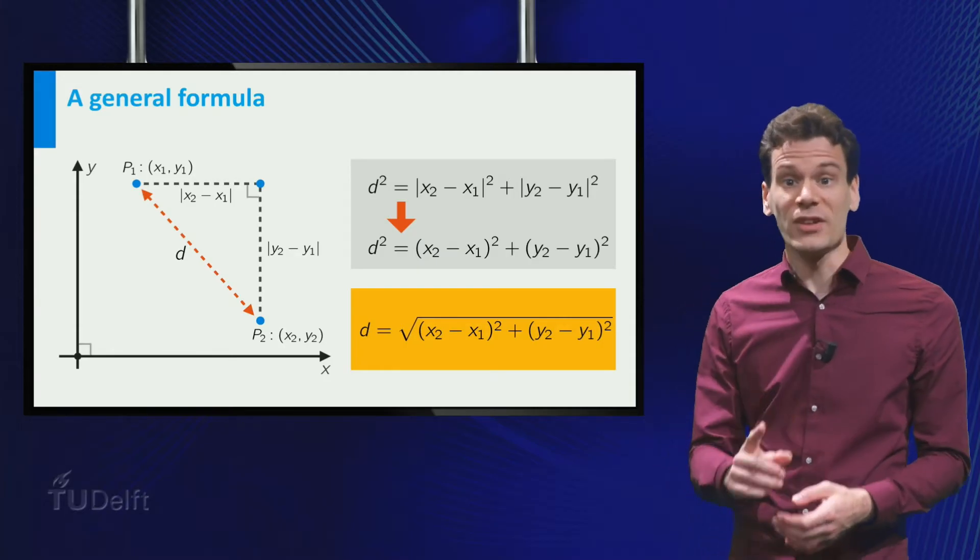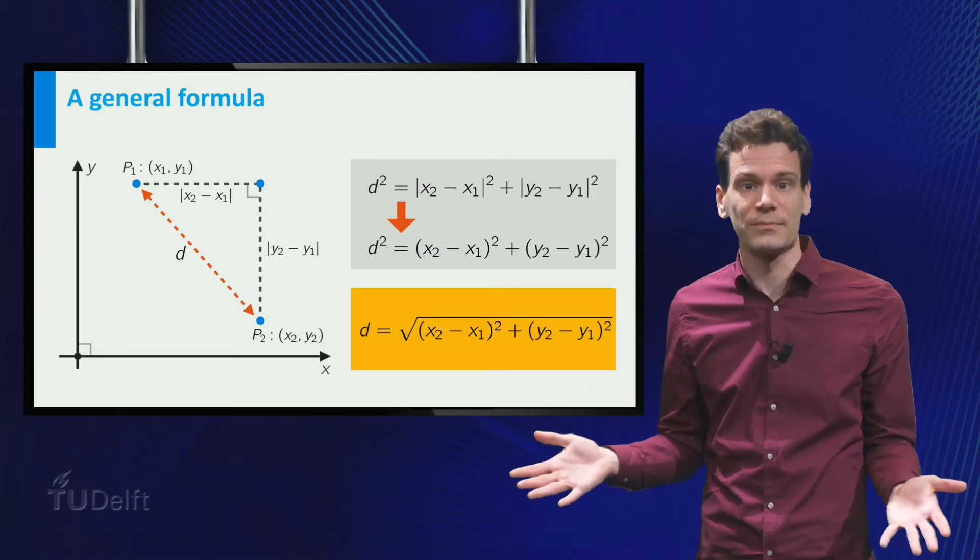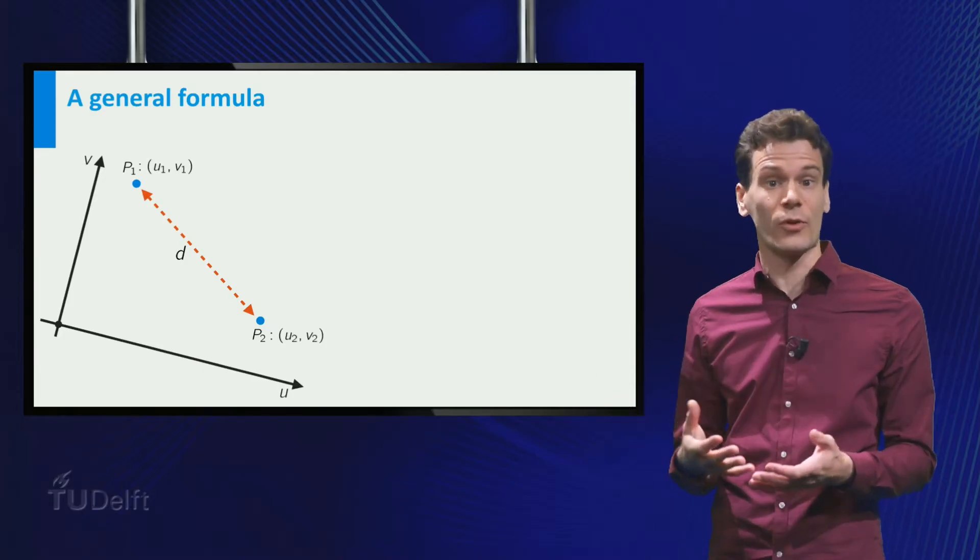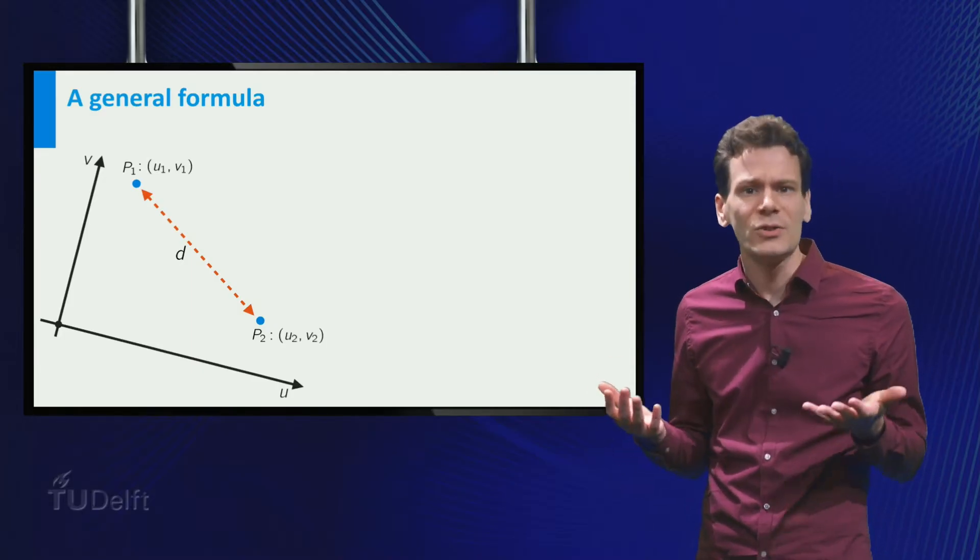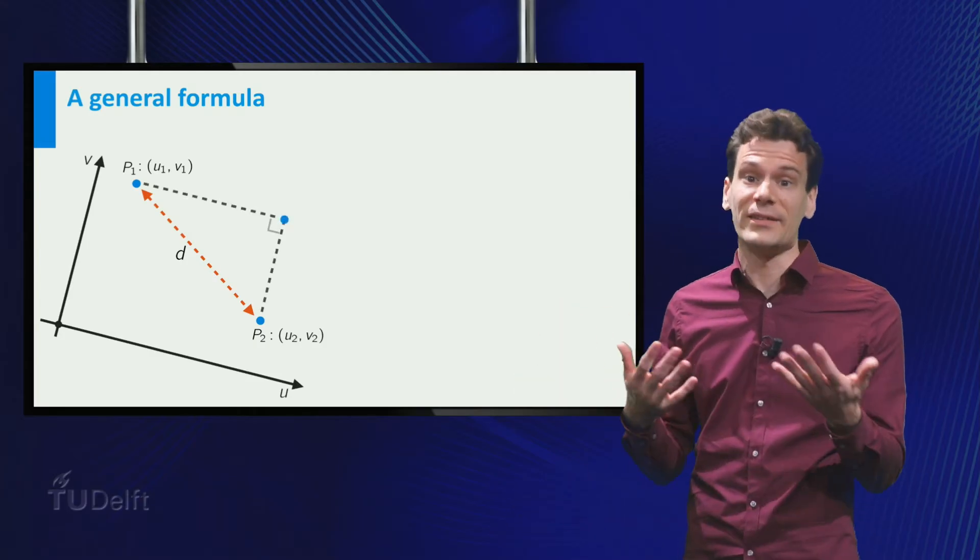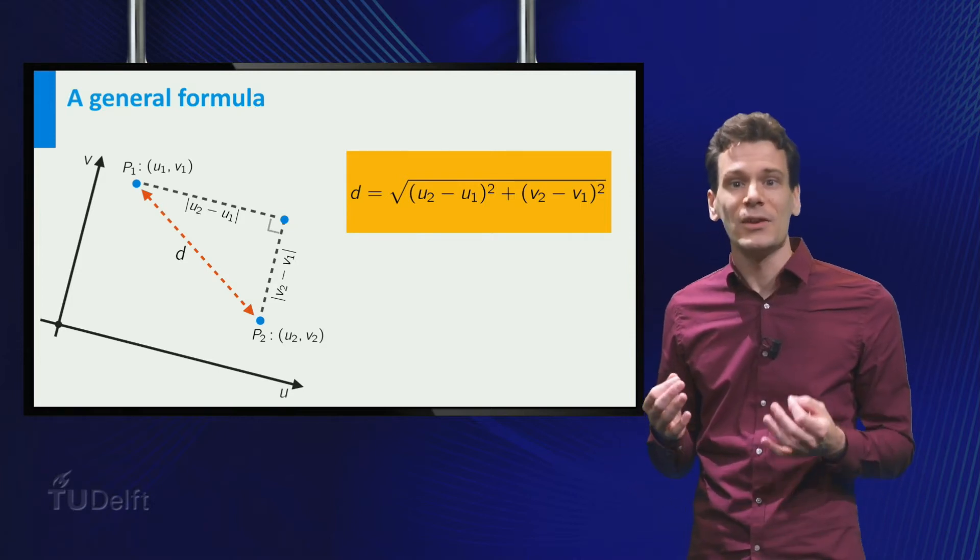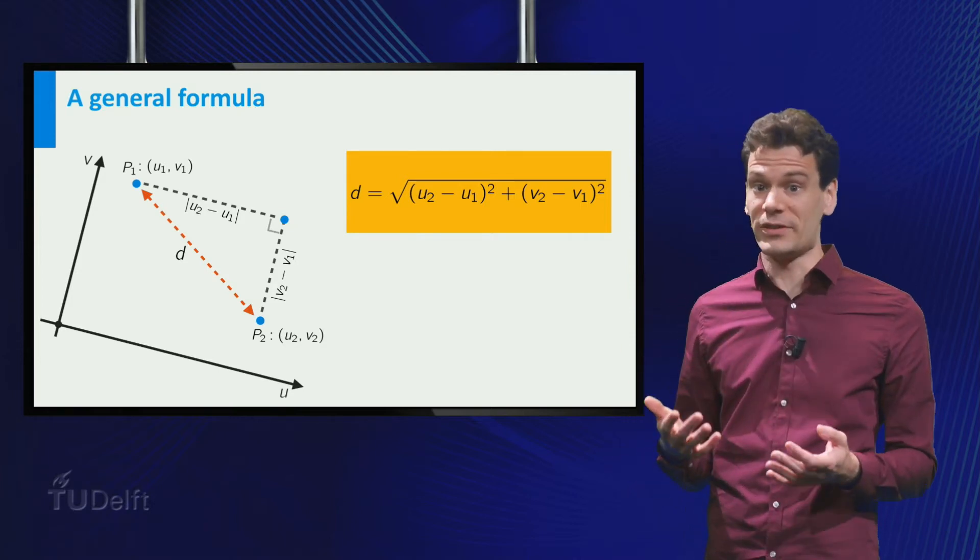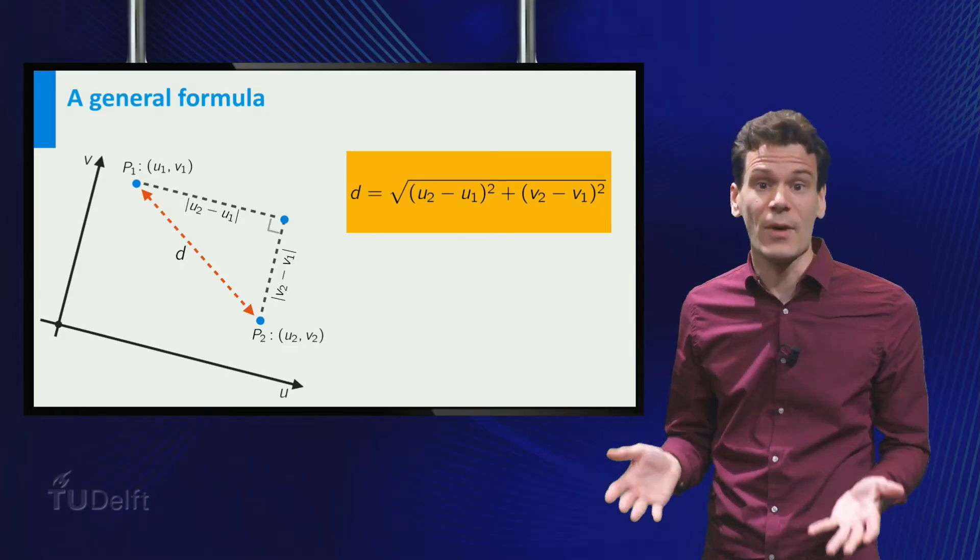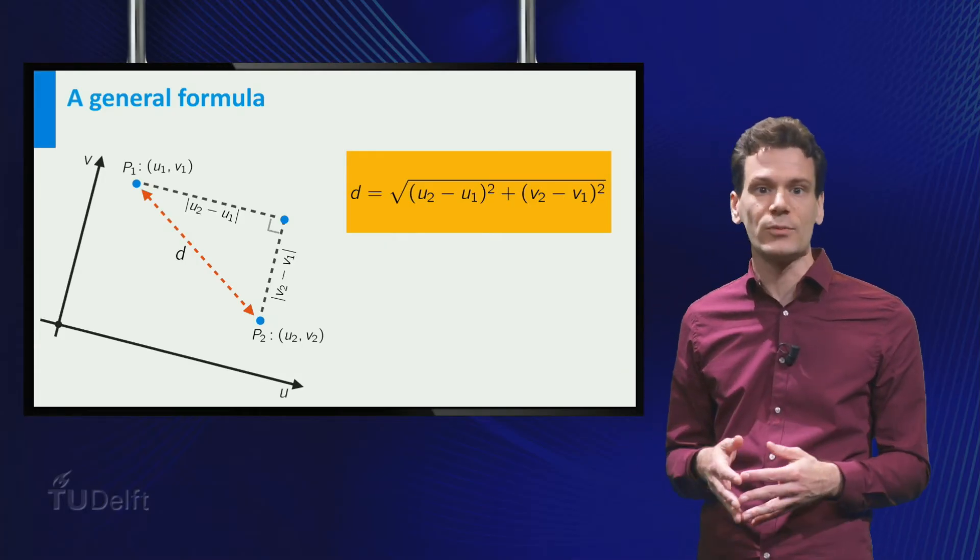But wait, we made a choice of Cartesian coordinate system, right? What if we make a different choice? Well, let's do that. And let's label the axes u and v to distinguish them from the previous axes. We can do exactly the same trick of constructing a right triangle, find the length of the legs, and then use the Pythagorean theorem to find d. You see that although the coordinates are different, the formula is the same. And of course, it gives the same answer. Distance is a geometric quantity, so it should not depend on the coordinate system that we use.